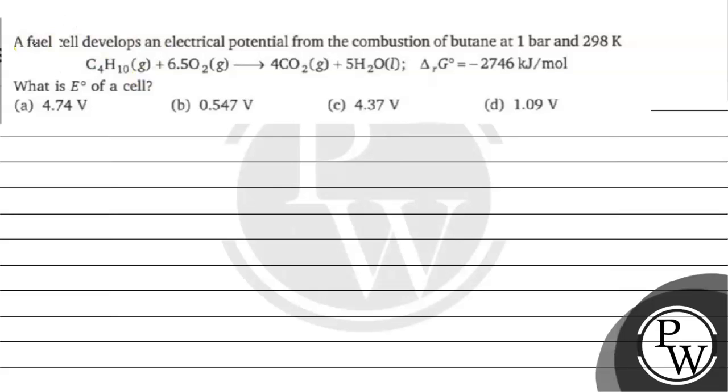Let's read this question. The question says a fuel cell develops an electric potential from the combustion of butane at one bar and 298 Kelvin.